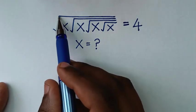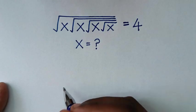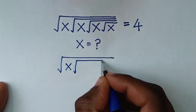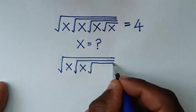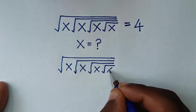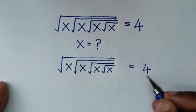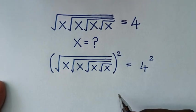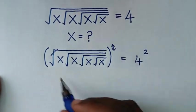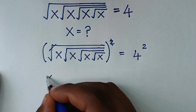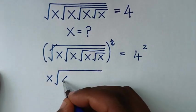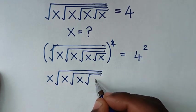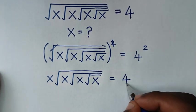In the first step, to remove this outer square root, we'll square both sides. So from our problem, which is square root of x under square root of x under square root of x is equal to 4, we'll square it on both sides. This square root will cancel with this square, and it will be x times square root of x under square root of x is equal to 4 squared.